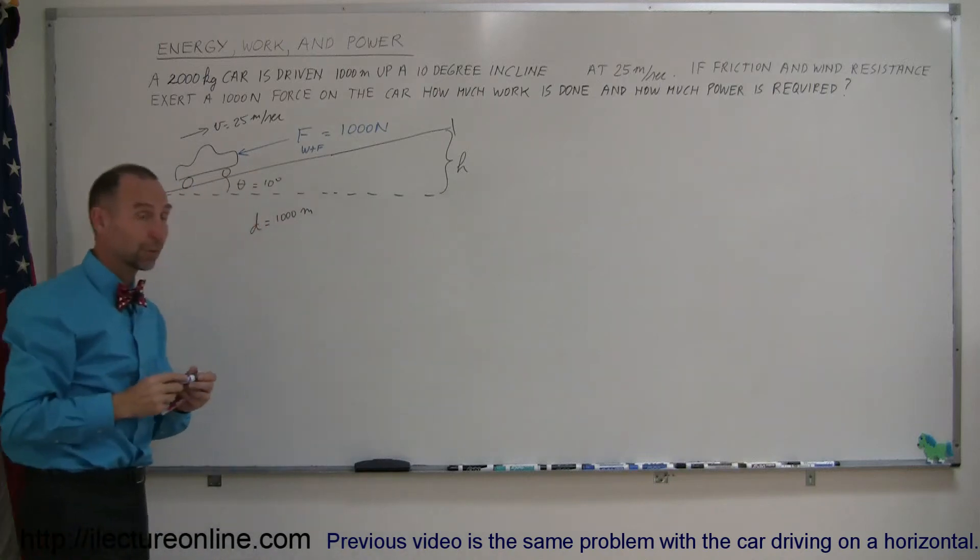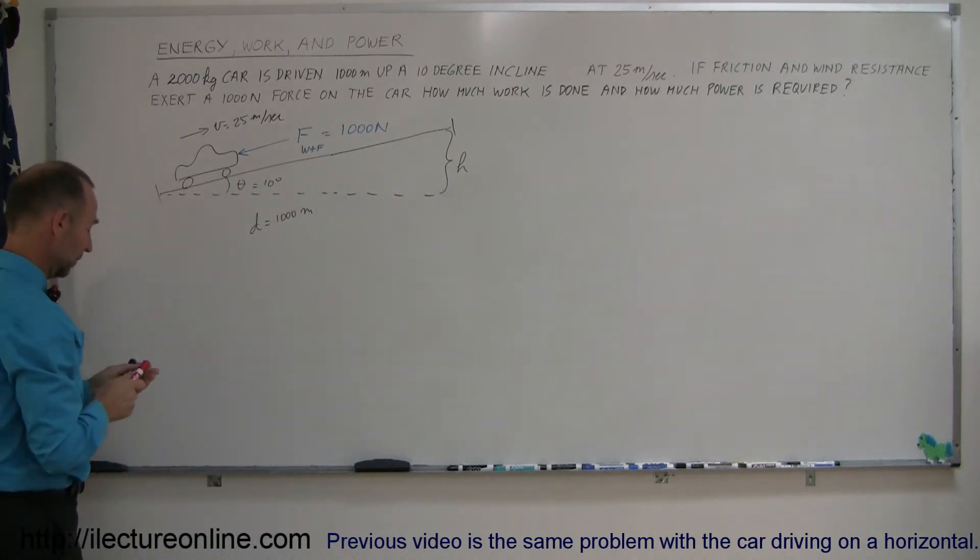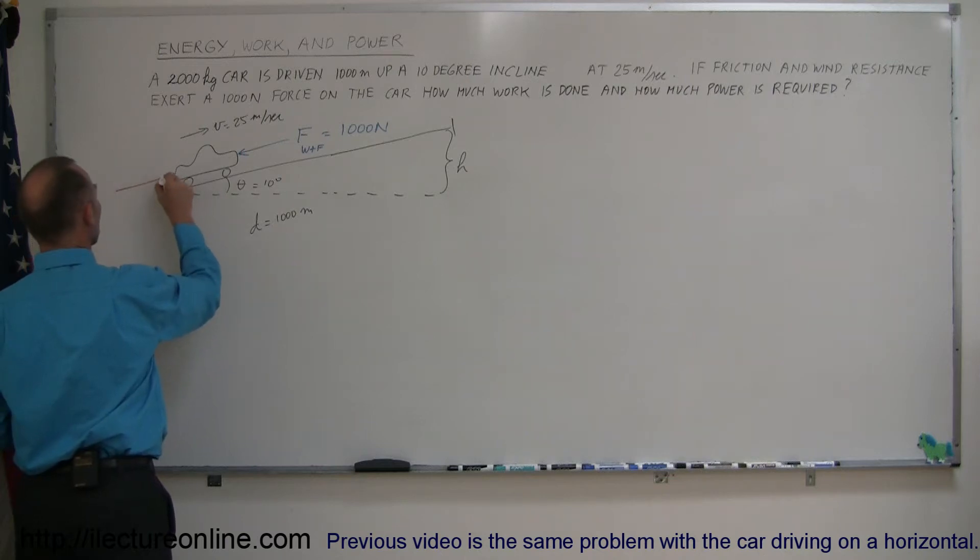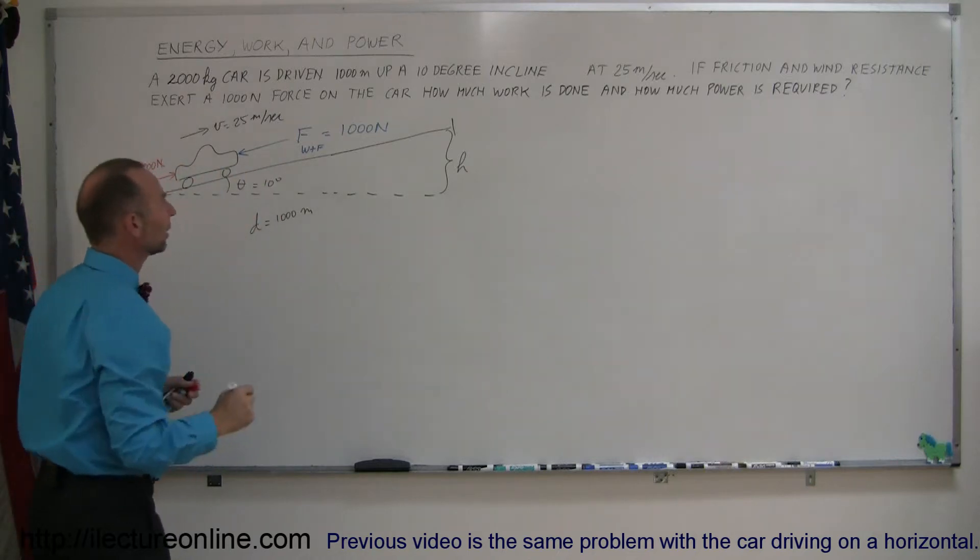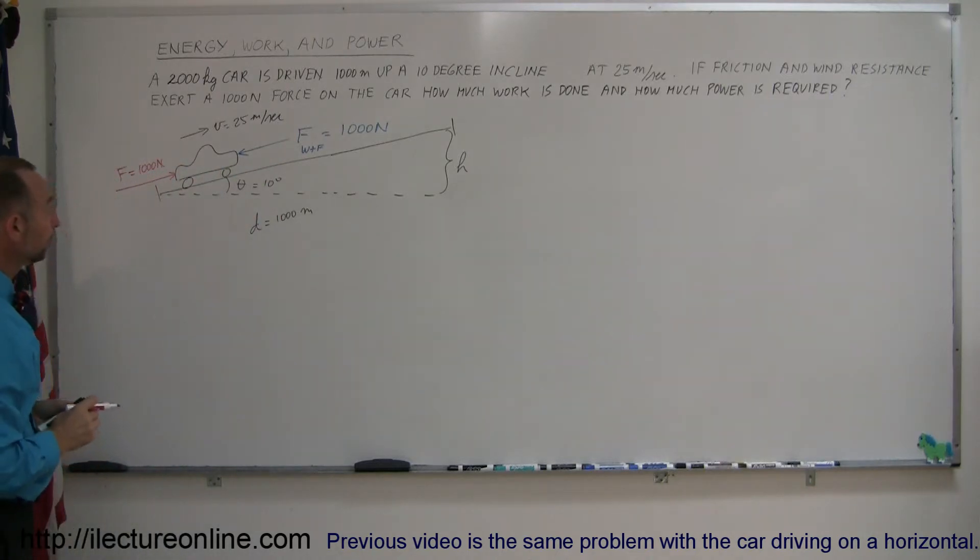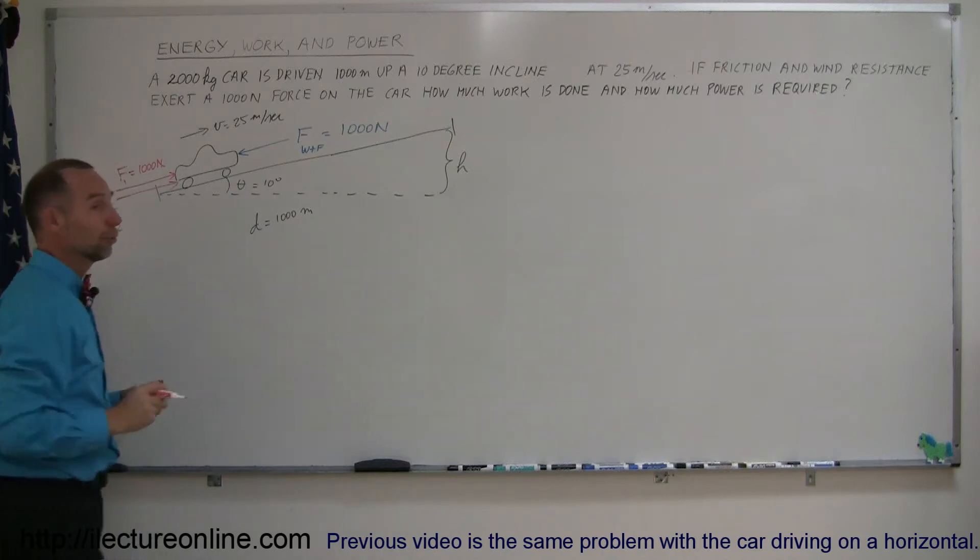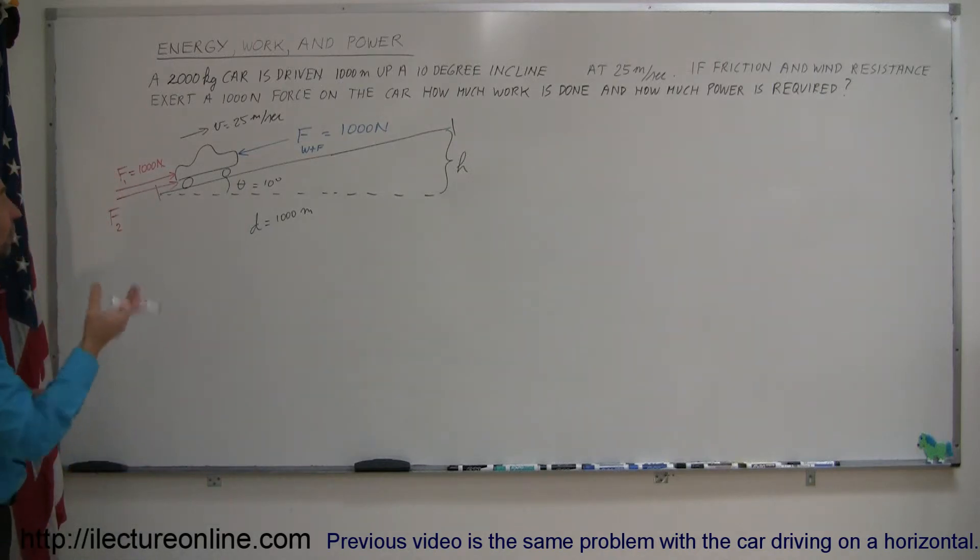So, what does the car need to get up the hill? Well, first of all, the car needs to have a force coming from its engine equal to 1,000 Newtons to overcome the wind and the friction force. On top of that, there needs to be an additional force. I'll call it force 1 and force 2, to overcome the increase in height. It's gaining potential energy that also will require some force.